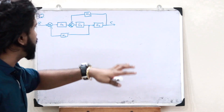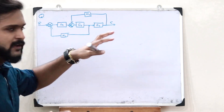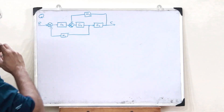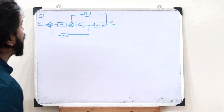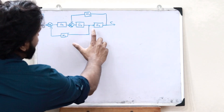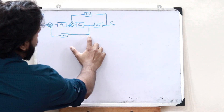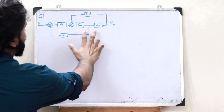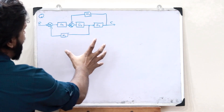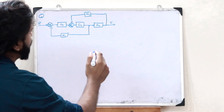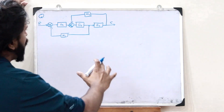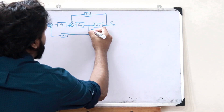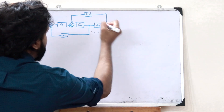When we observe this particular diagram, we see that it is this particular branch that is causing the complexity. If we move this branch to a different position, we could simplify things. Let's consider moving this branch ahead past G3.